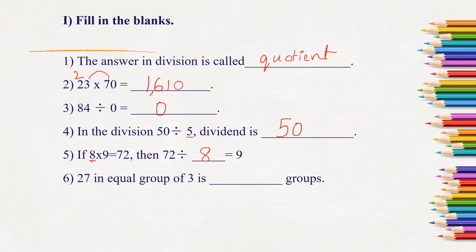Next, 27 in equal group of 3 is dash groups. 3 what times is 27? 3, 9 times is 27. So 27 in equal group of 3 is 9 groups.